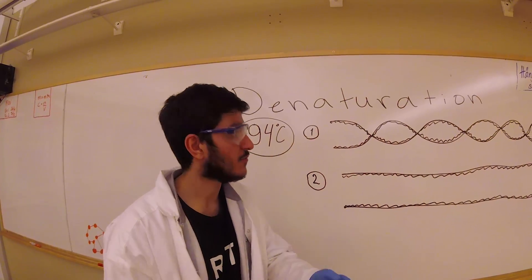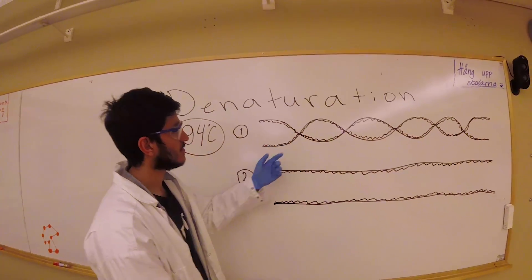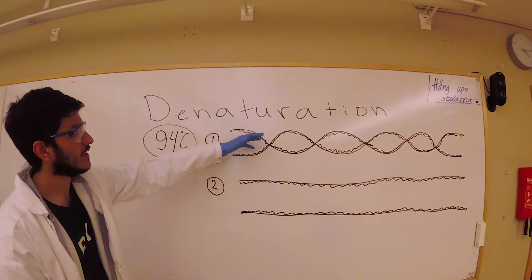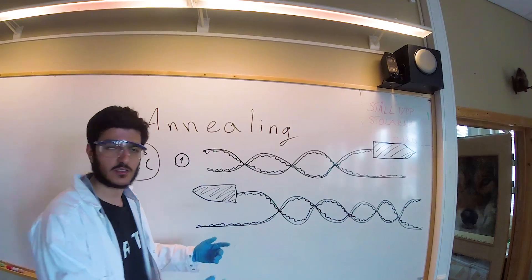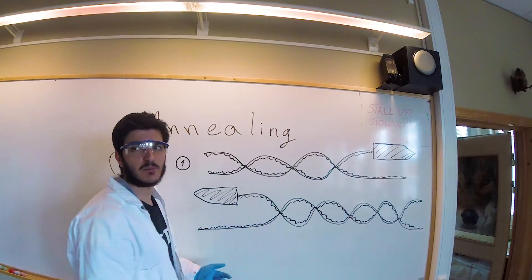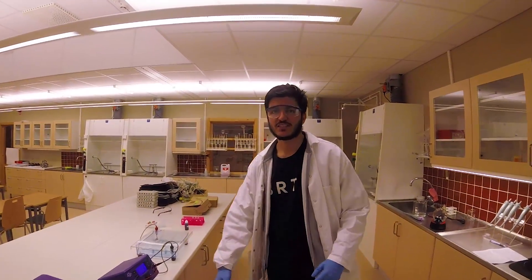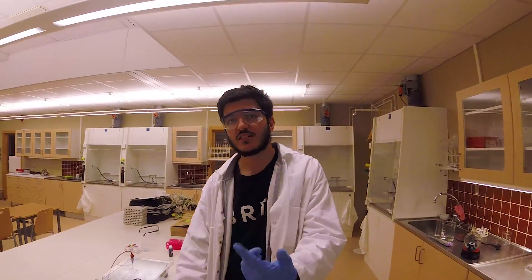But we start off with the denaturation step — we heat DNA to split the strands. Now we start off with the annealing step. Everybody's screaming, cool it! The hole needs to cool the hybridization, and start over the circulation. And now we get the DNA application.